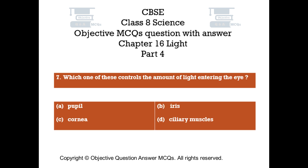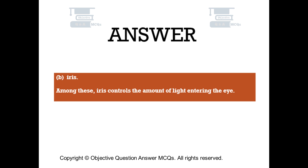Question number 7. Which one of these controls the amount of light entering the eye? Option A pupil. Option B iris. Option C cornea. Option D ciliary muscles. The right answer is option B: iris. Among these, iris controls the amount of light entering the eye.